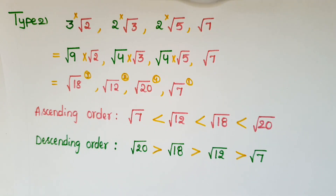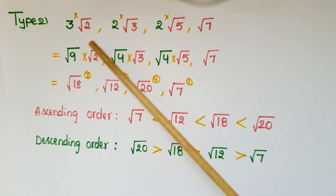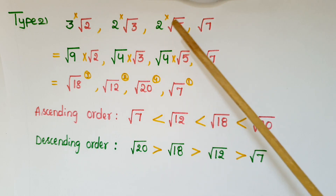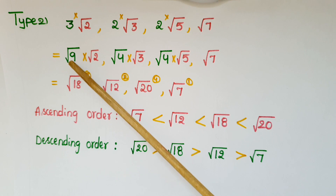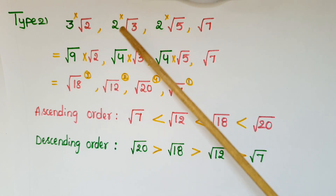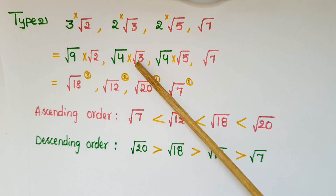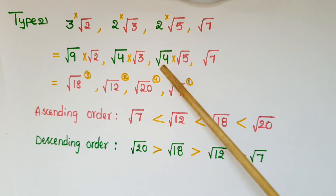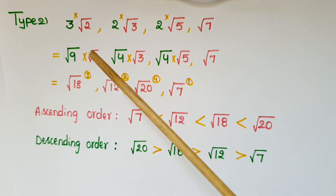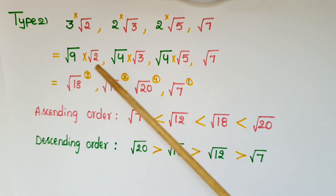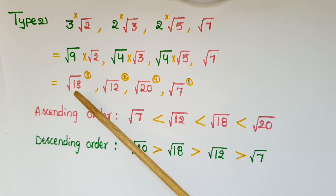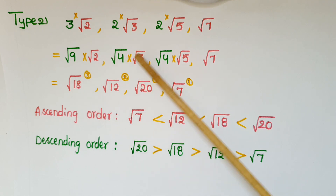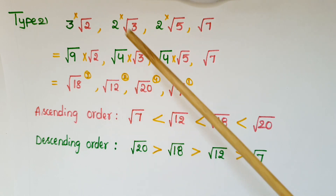This is the second type of problem: 3 times square root of 2, 2 times root of 3, 2 times root of 5, and root 7. We can write 3 as root 9, because root 9 equals 3. So root 9 times root 2; and 2 we can write as root 4, so root 4 times root 3; and 2 as root 4 times root 5; and root 7. We know that root a times root b equals root of (a times b).